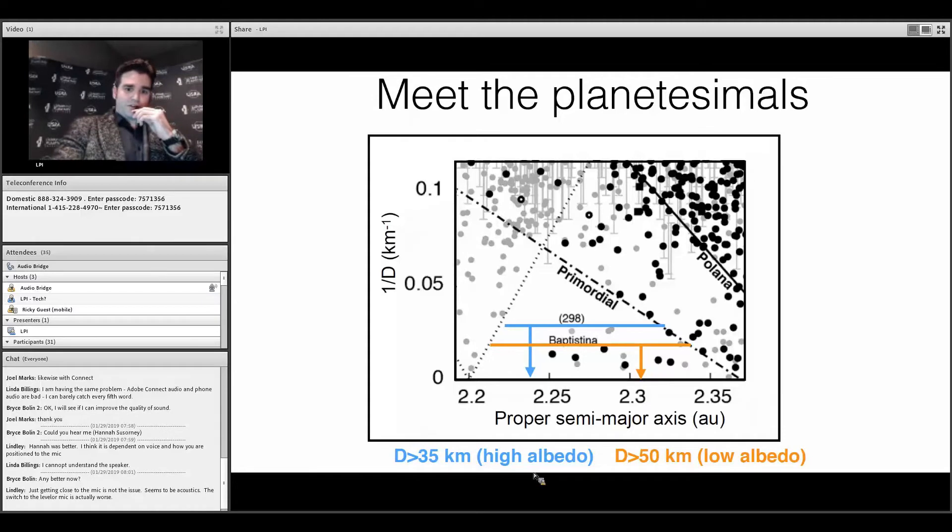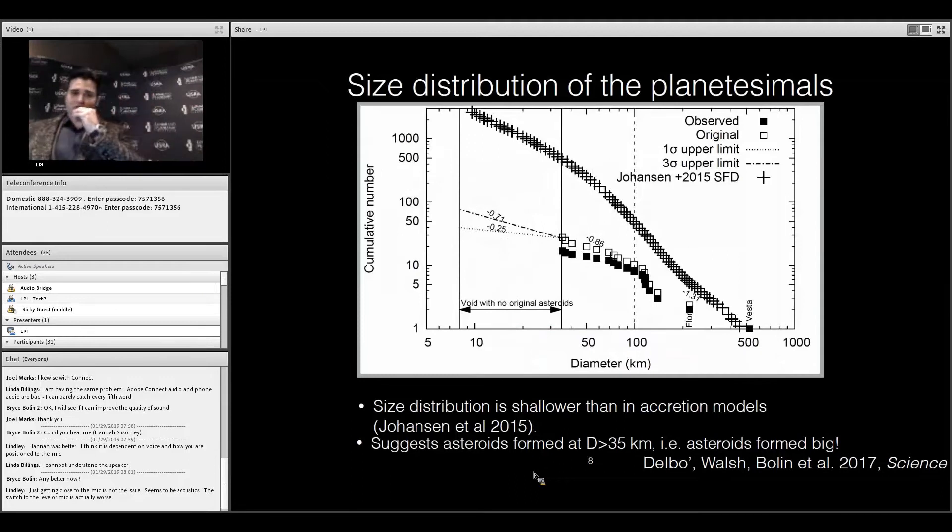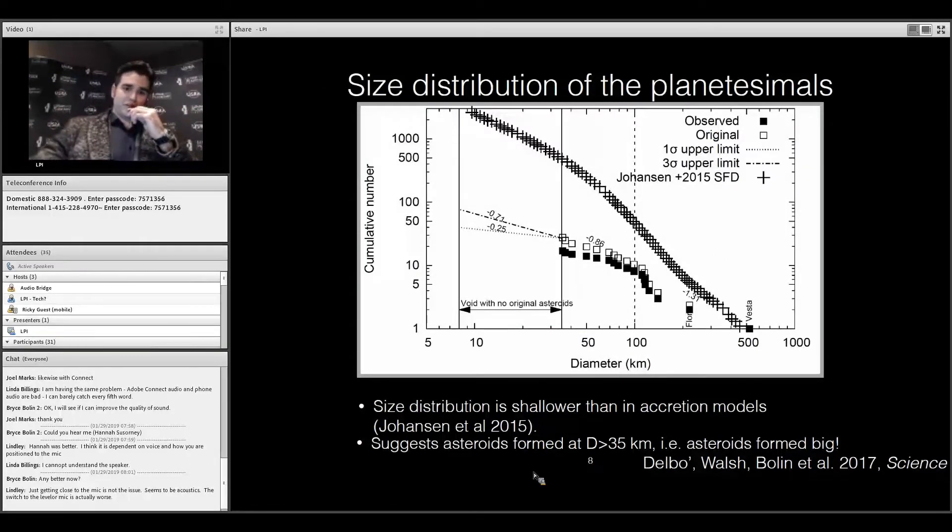If you take all of the asteroids below the blue and orange line, they have a size distribution that is very shallow. This plot here shows the size distribution as a function of diameter. The filled squares are the size distribution that we see today. However, when one takes into account the collisional and dynamical depletion of the asteroids, you can correct the number that we see today and infer what the original population was.